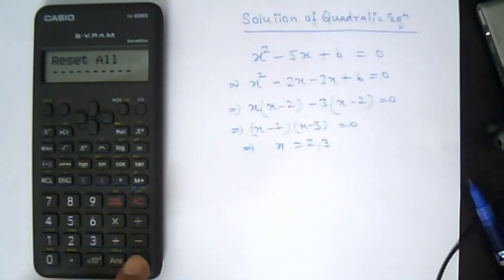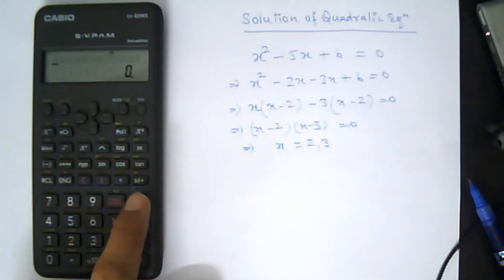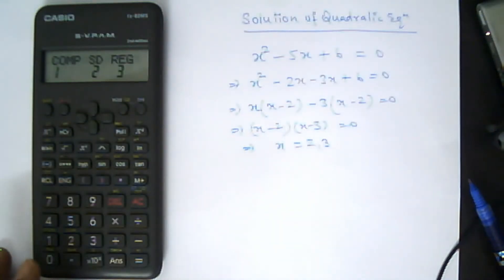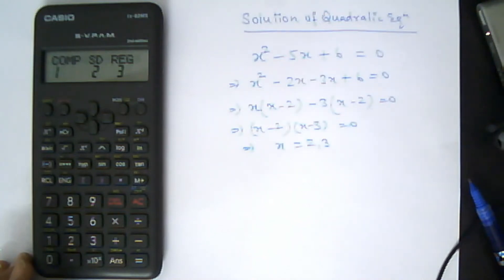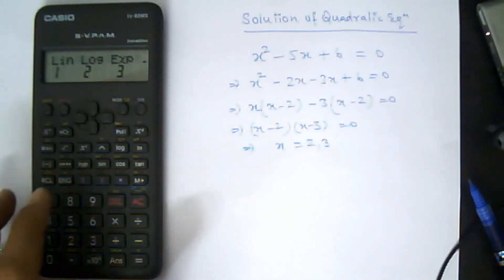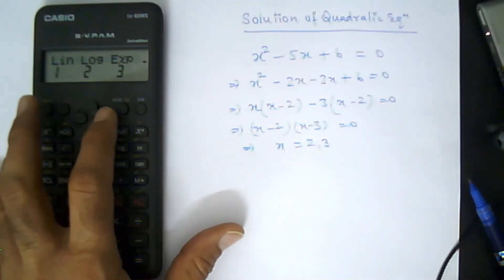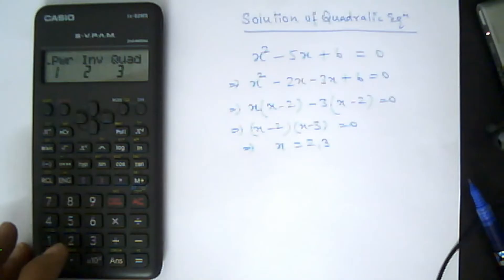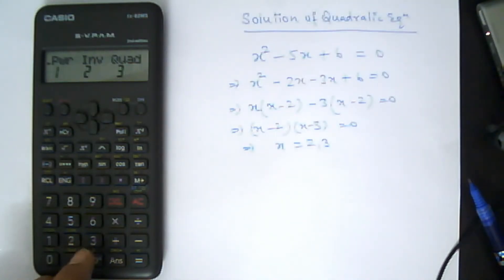Press the equal sign and all data are reset. Press zero, then press Mode again. Options will appear — for finding the solution of a quadratic equation, press 3. Then press the right arrow key on the right side of the calculator, and select 3 from the keyboard for the quadratic equation mode.